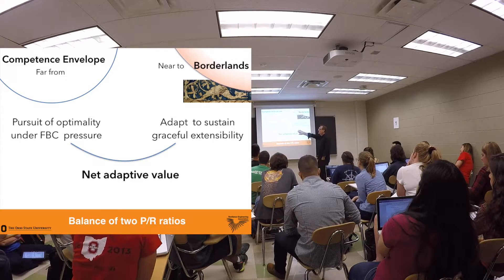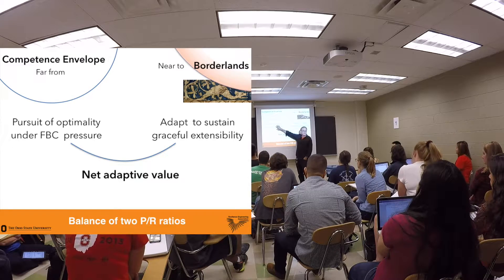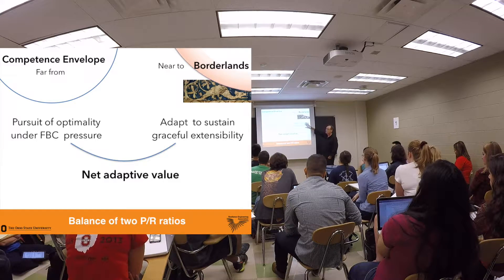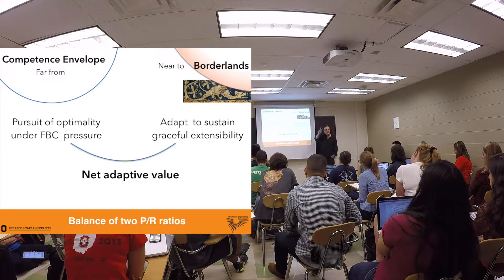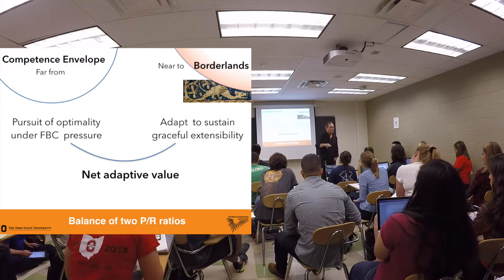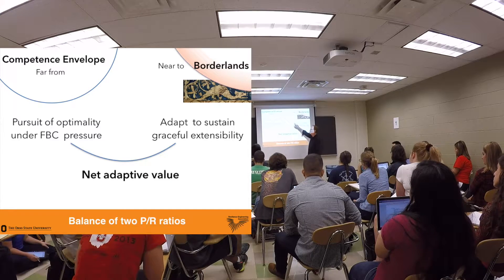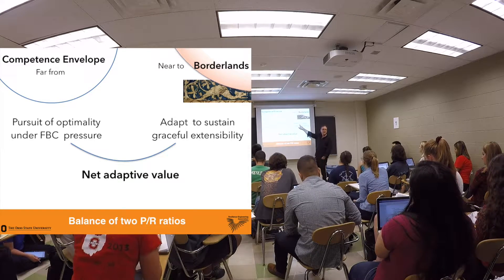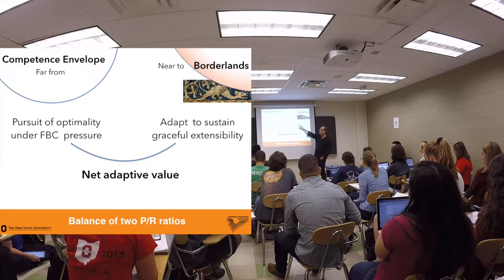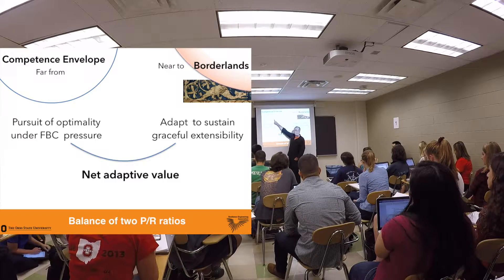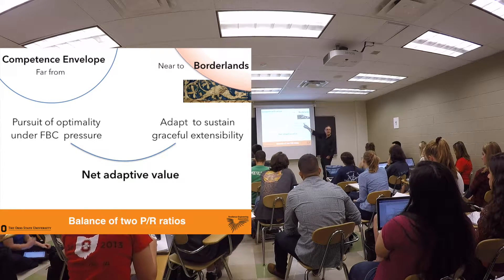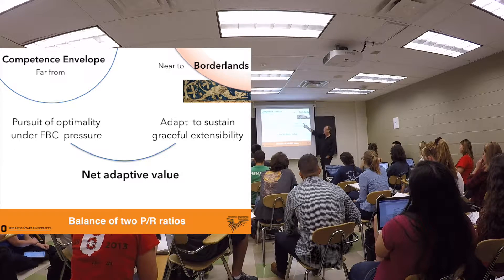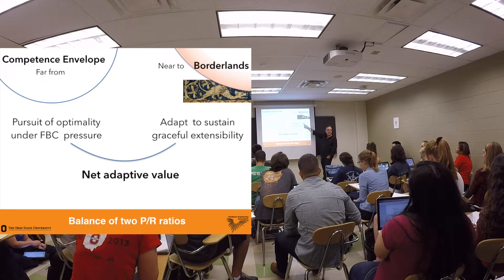What we're going to introduce is the idea that both the pursuit of optimality under faster, better, cheaper pressure, and the ability to sustain graceful extensibility, are simultaneous properties of a good organization. You have to have both. And we'll run through some existence cases. Think about the safety manager in the anesthesia crisis training case. Over time, is it going to look like a source of resilience or an inefficiency to be pruned from the system under faster, better, cheaper pressure?